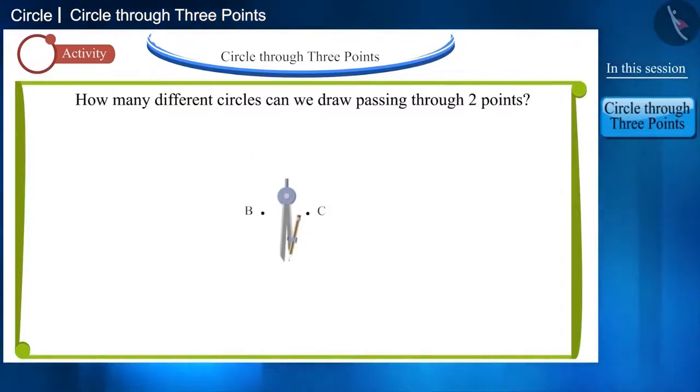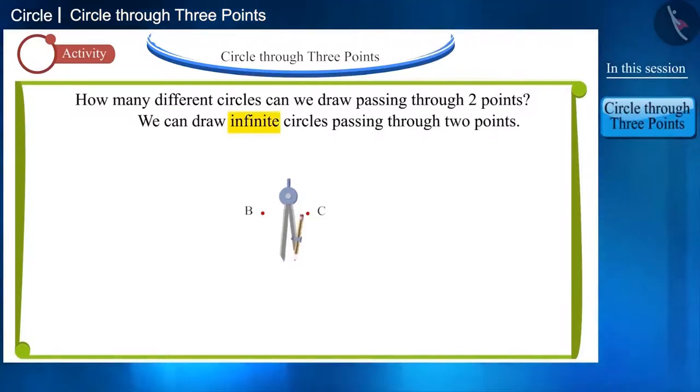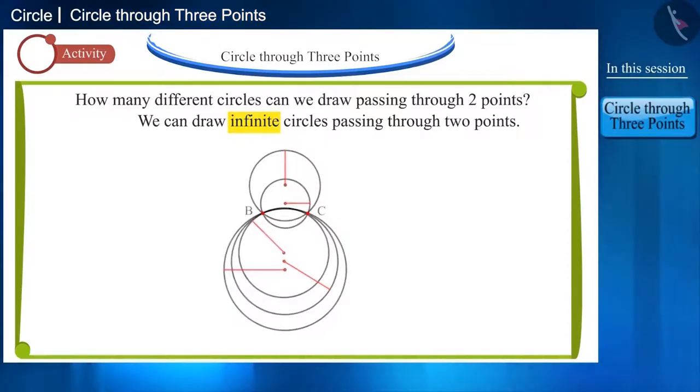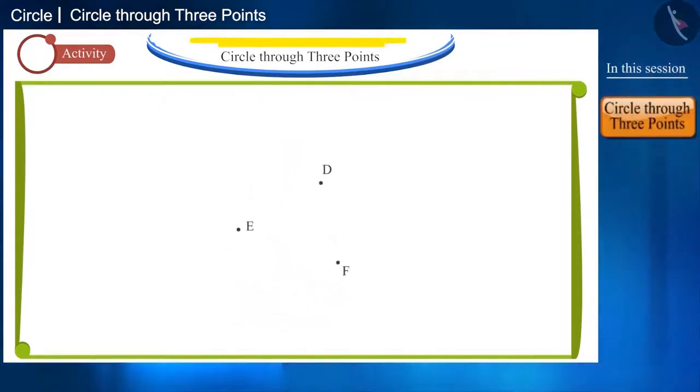That is, we can draw infinite circles passing through two points with the help of a compass. We draw the first circle, second circle and this one is the third circle. We can draw more circles by taking different radii. Let's move forward and look at the number of circles that can pass through three points.